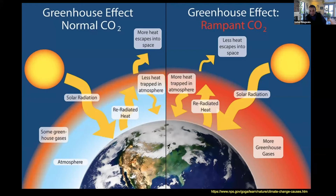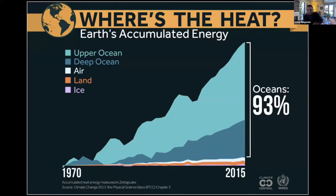Where is all this heat going? Much of it — over 90 percent — is going into our oceans. The ocean is very kindly taking it all, but it's possible it will absorb less as it warms up itself. All this accumulated heat in the climate system, primarily in the ocean, is driving changes in our weather and climate extremes: droughts, increasing flooding intensity, and wildfires.